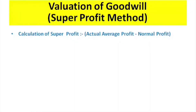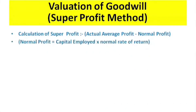If there are any adjustments to be made, we calculate the actual average profit. In this problem, Ganesh could have earned ₹4,500 per annum in alternative employment, so this amount is deducted to arrive at the actual average profit.